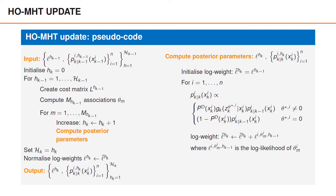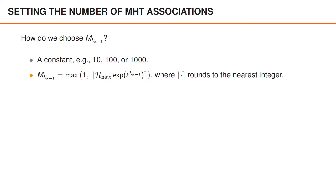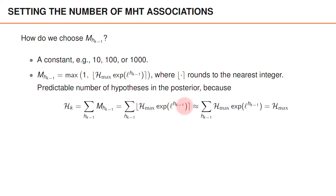Before talking about reduction, there are two things that need more detail. The first is how we decide the number of associations, capital M, and the second is how we normalize the log weights. One very simple choice is to have a fixed number like 10, 100, or 1000. Another way to set M is to use the log weights: by multiplying the maximum number of hypotheses, calligraphic H-max, with the weight given by the exponential of the log weight, and then rounding, we get an integer number of associations. If we add these numbers, the sum will be approximately equal to H-max, which means the number of hypotheses in the posterior before reduction is predictable — we know it will be at most H-max.